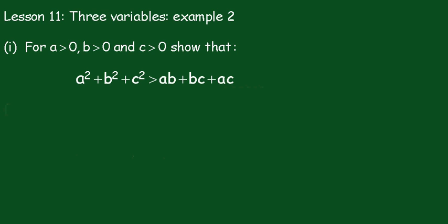Lesson 11, 3 variables, example 2. In part 1, for a greater than 0, b greater than 0, and c greater than 0, we have to show that a squared plus b squared plus c squared is greater than or equal to ab plus bc plus ac.